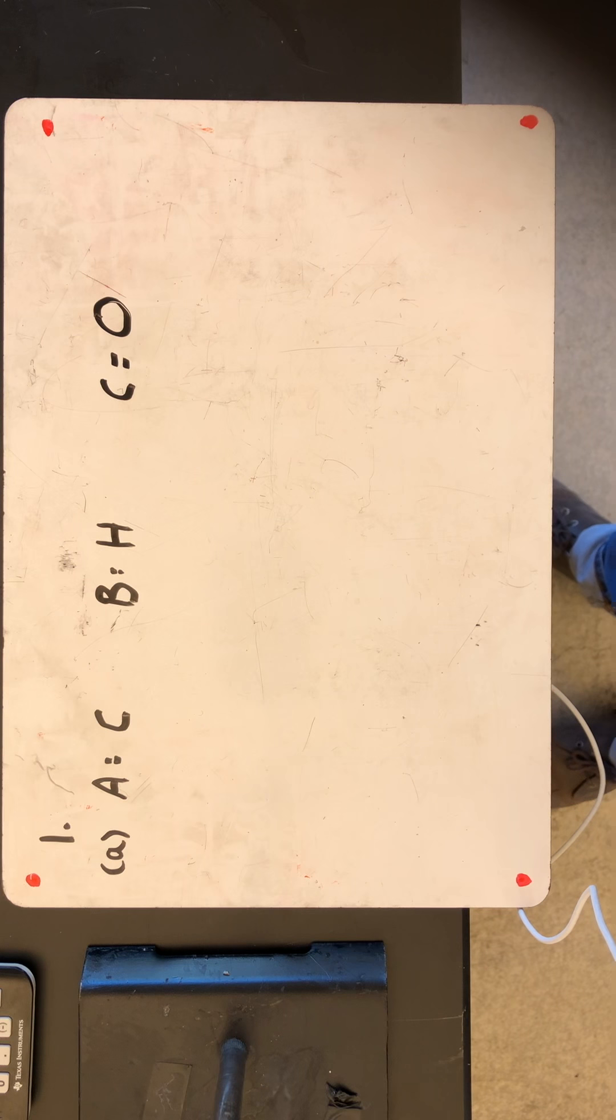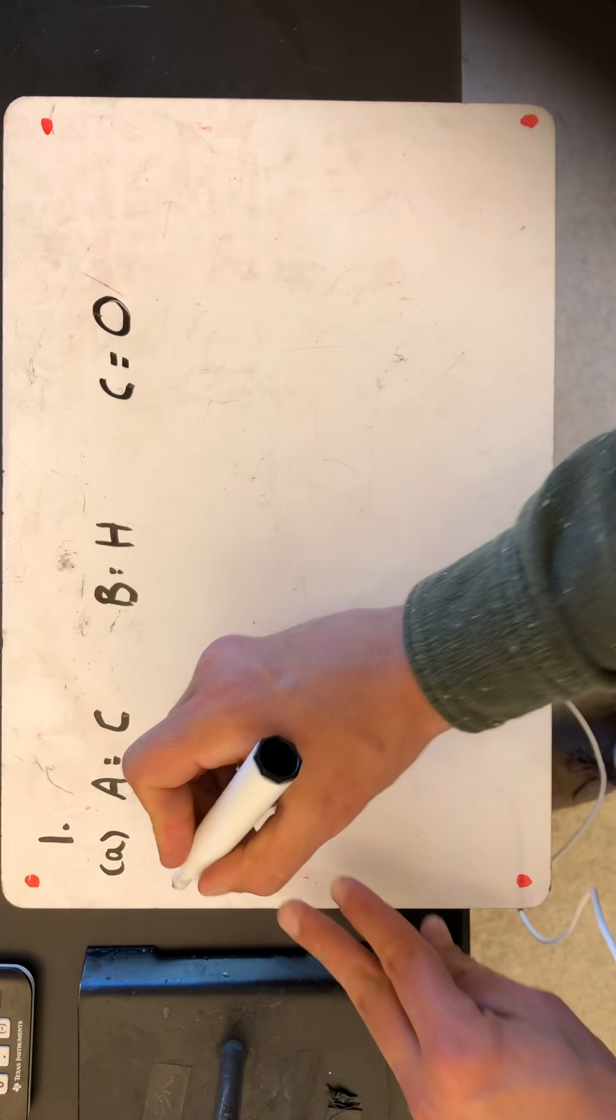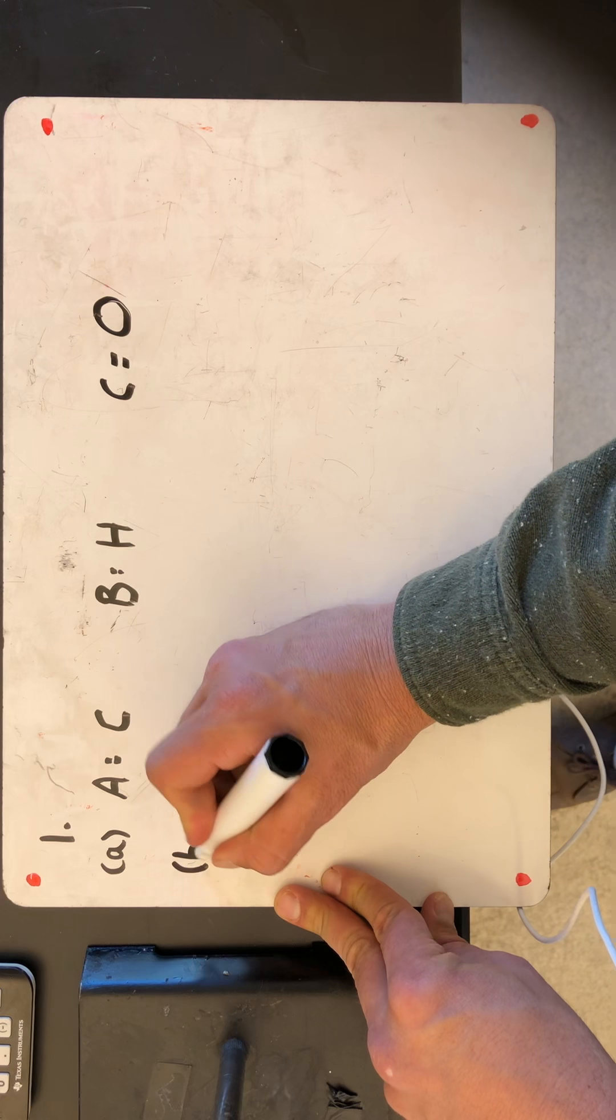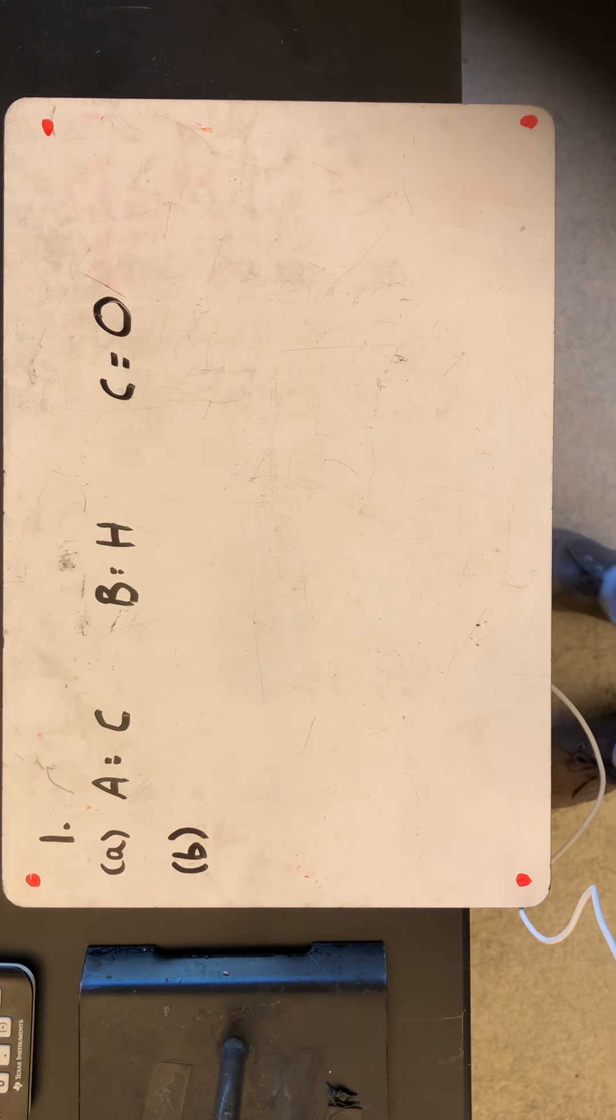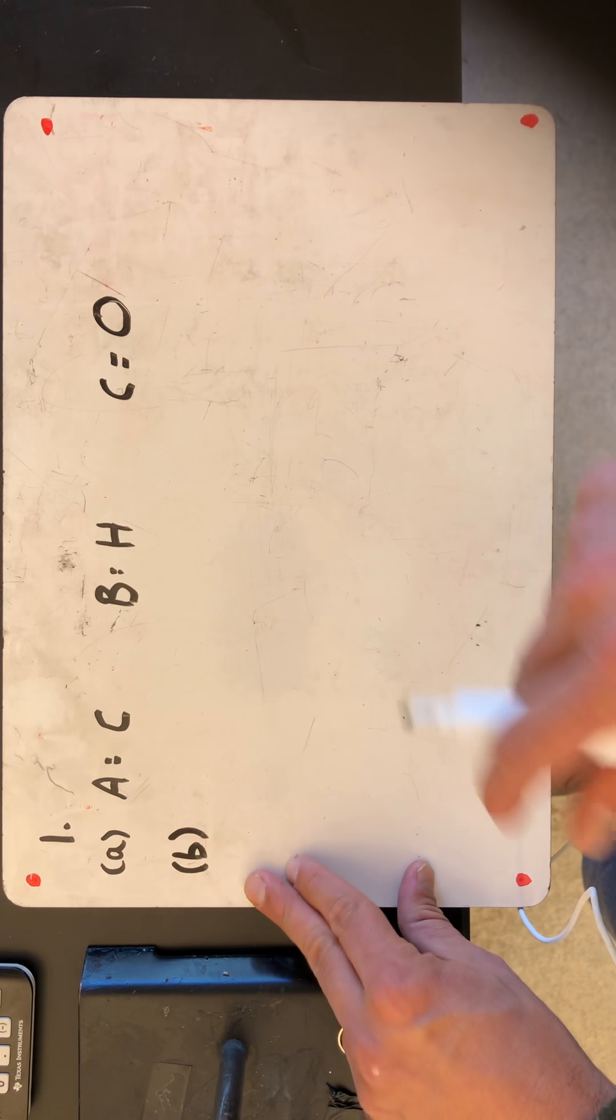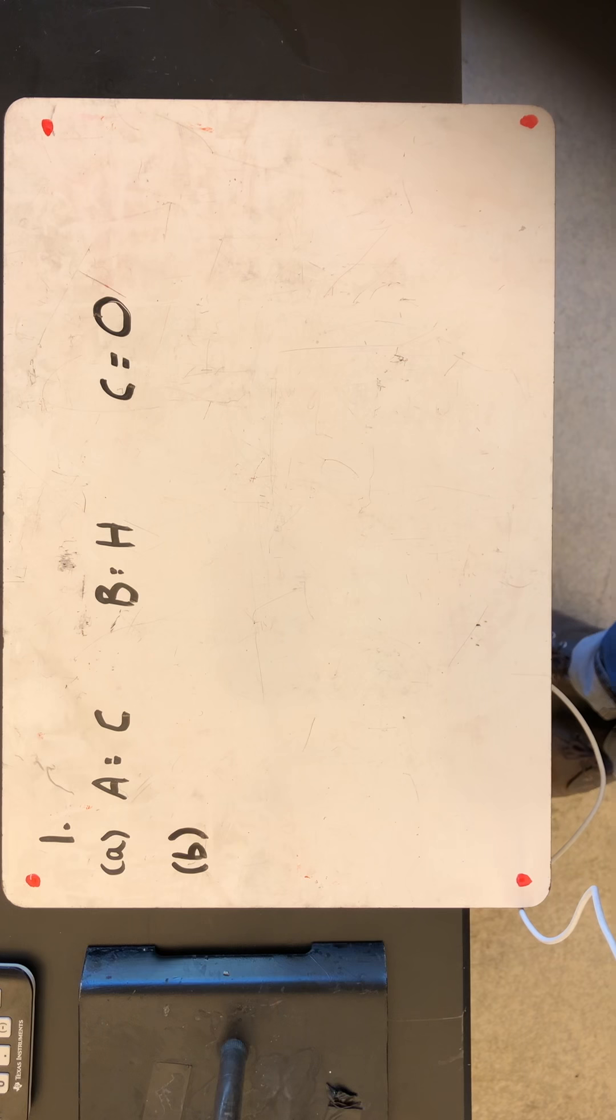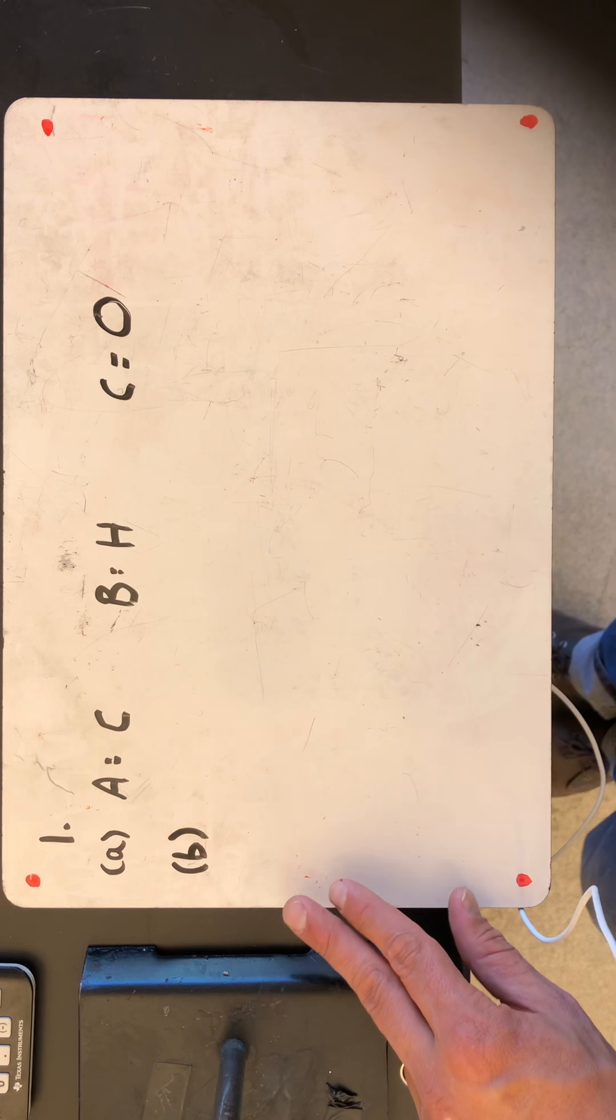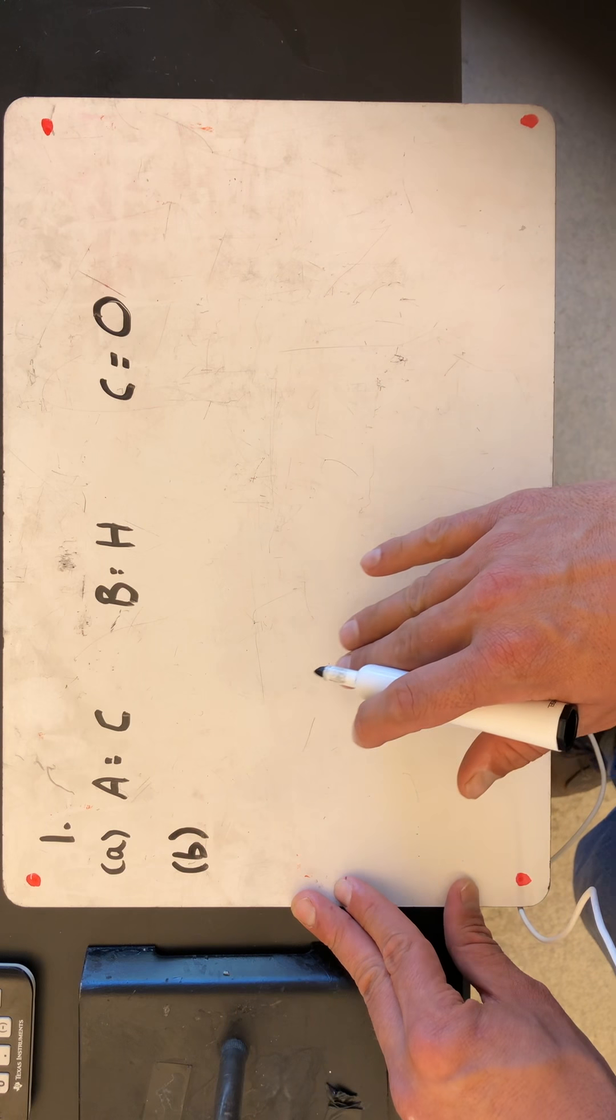Given the mass percentage, determine the formula for the unknown compound, so that's gonna be in B. So we can always assume a 100 gram sample, and if we assume a 100 gram sample, that means the percentages are grams. So let's go ahead and convert each to moles, grams to moles, divide by the smallest.